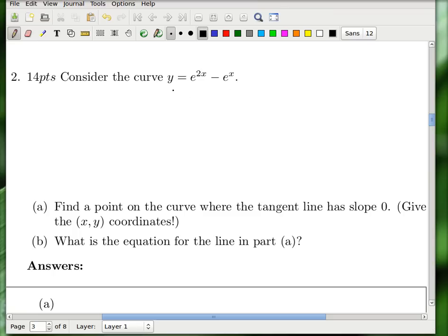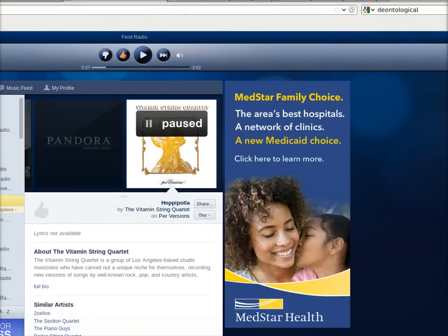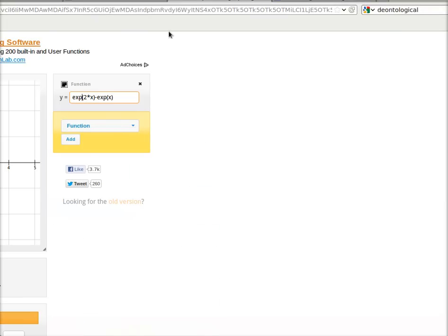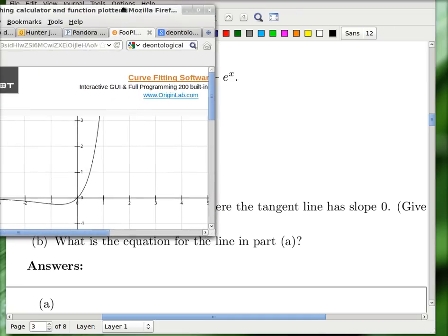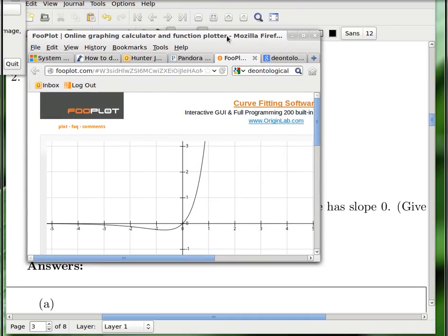So here's the curve, y equals e to the 2x, and then there is e to the x there. So I think I still have the graph of it up here somewhere. So here it is, this is what it looks like.